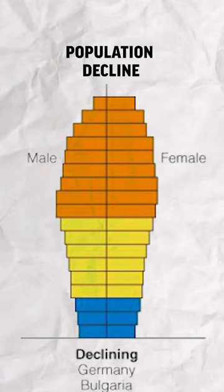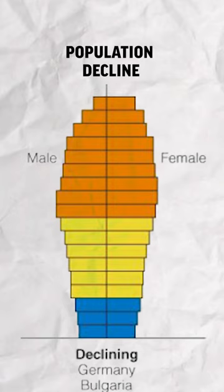And finally, if the post-reproductive age cohort is actually bigger than the cohorts beneath it, it's likely that the country is actually experiencing population decline and you're looking at a very affluent or highly economically developed country. If you want to learn more about age structure diagrams, check out my full video on YouTube.